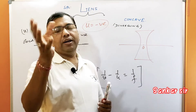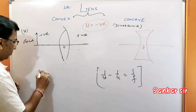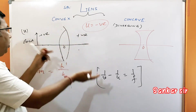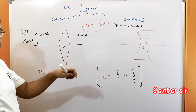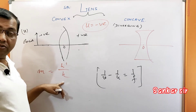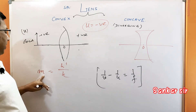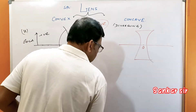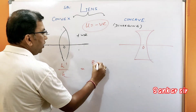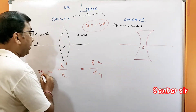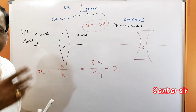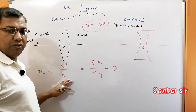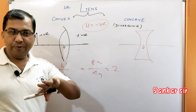Last is magnification. In the case of a lens, magnification m equals h' by h, where h is the height of the object and h' is the height of the image. In some cases, where object distance is not given but heights are given, magnification equals h'/h. For example, if image height is 8 cm and object height is 4 cm, magnification is 8/4 = 2, meaning the image is 2 times the size of the object. Magnification can also be expressed as v/u.